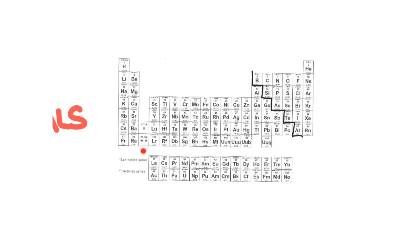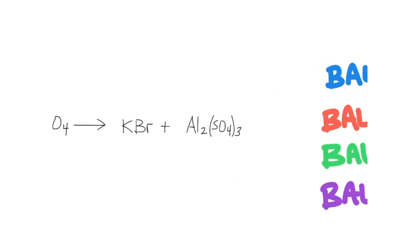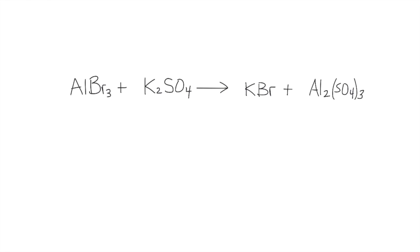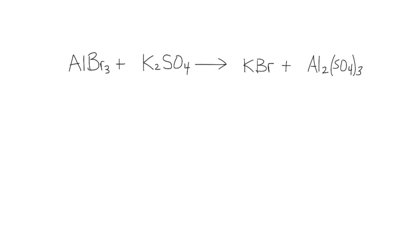So if we start by balancing all the metals first, then move on to the non-metals, ignoring hydrogen and oxygen until the end, we should be able to balance any chemical equation. I really recommend using a pencil because you'll probably have to go back and change numbers. What I like to do first is split the equation in half and list all the different elements on each side.